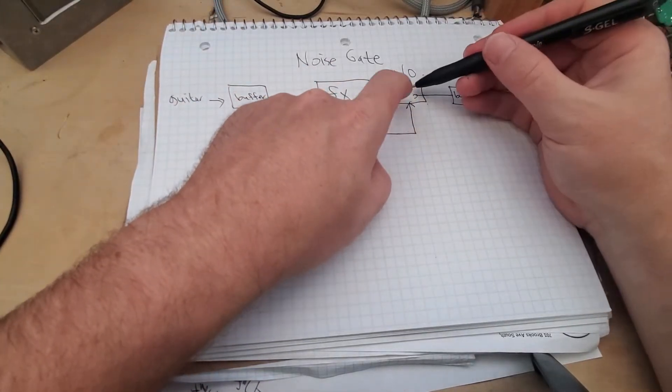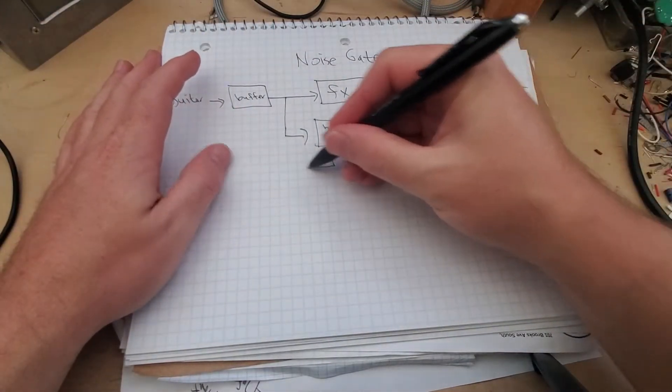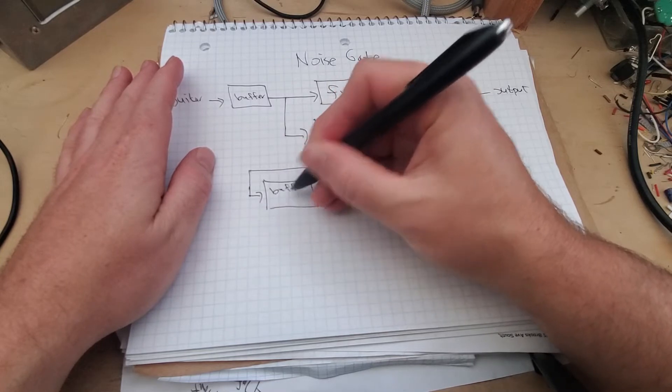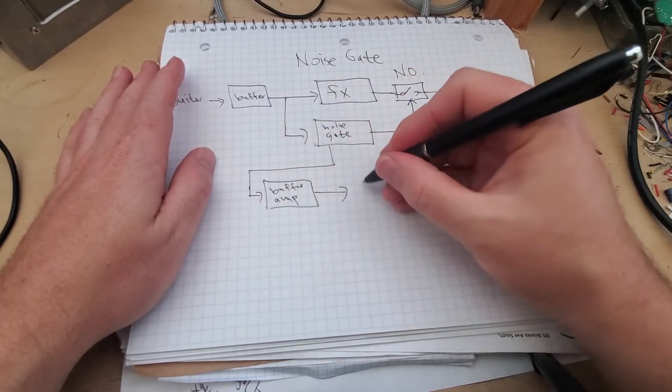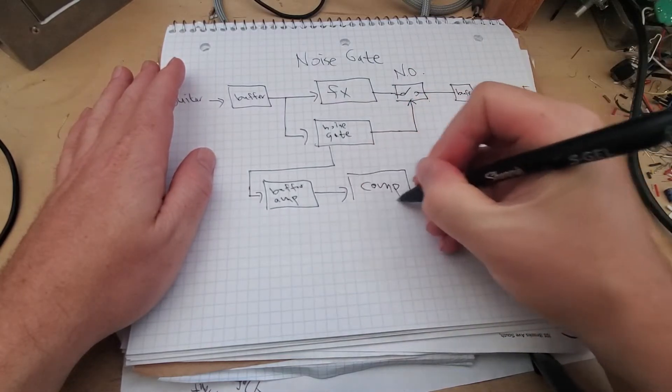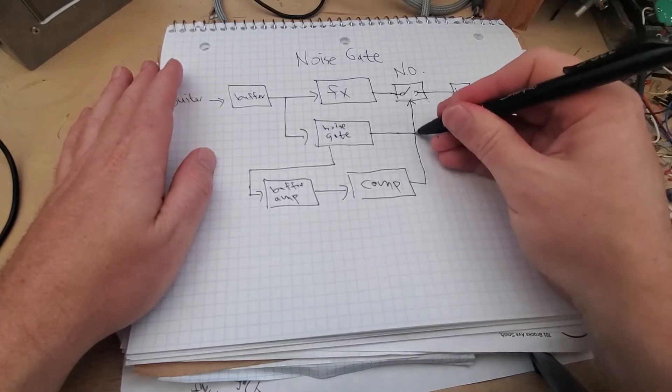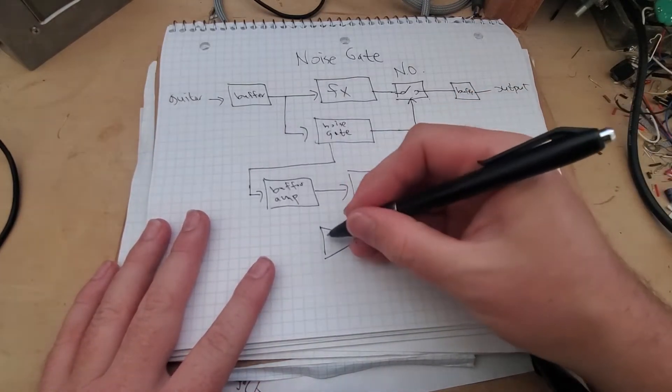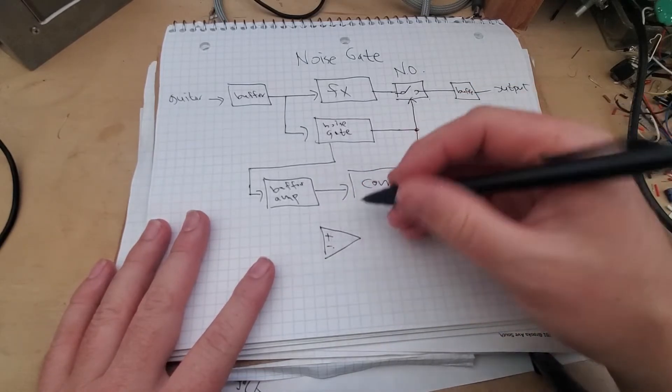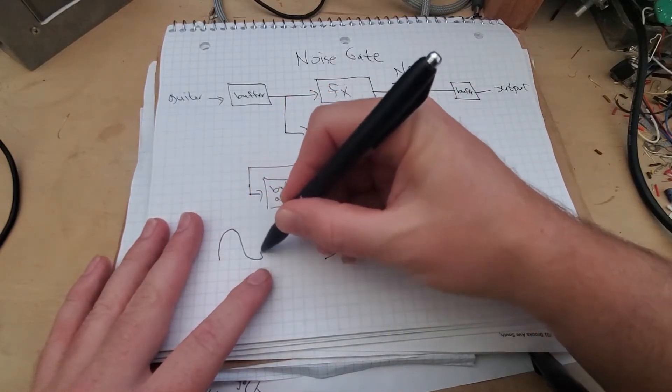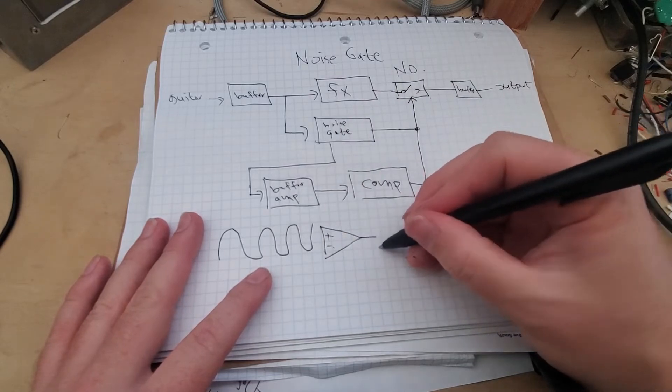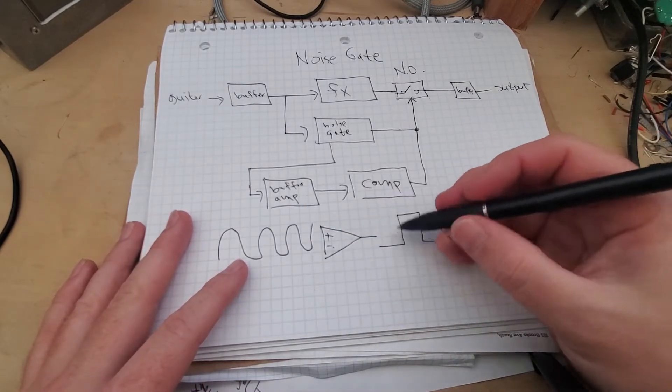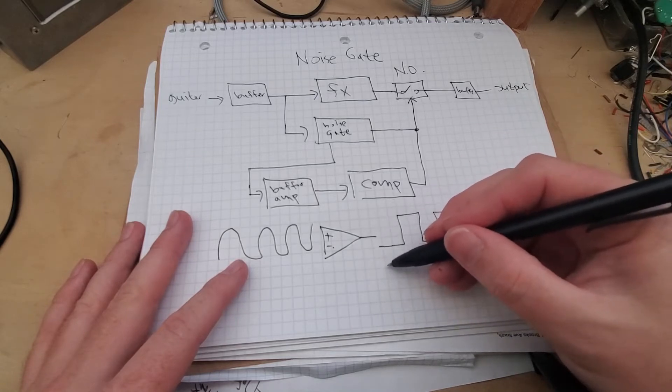Now inside of this noise gate we have some kind of a buffer amplifier once again, and this goes into a comparator which is the heart of this switch control. The way the comparator works is you have a non-inverting or inverting input and it takes your analog signal and turns it into a square wave. Depending on whether it's non-inverting or inverting will decide if the state starts at high or if it starts at low.